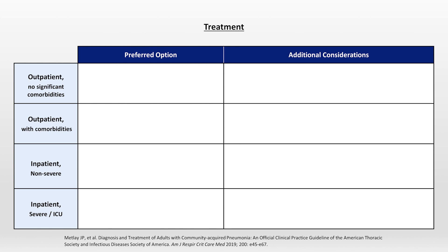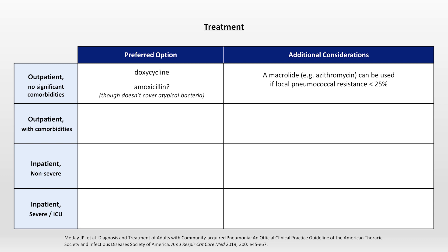For outpatient without comorbidities, preferred options include doxycycline and amoxicillin. The amoxicillin might seem a strange choice here since it doesn't cover atypical bacteria at all. The guidelines acknowledge this and reference outcome data demonstrating the effectiveness of amoxicillin nonetheless, which to the best of my knowledge has no great explanation. An additional consideration is that a macrolide such as azithromycin can be used, but only if the local rate of pneumococcal resistance is under 25%, which is essentially nowhere within the United States.